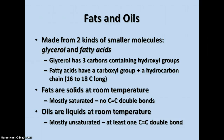The main kind of lipids that we normally think of are fats and oils. These are made from two kinds of smaller molecules: glycerol and fatty acids. The glycerol is a three-carbon compound that contains three hydroxyl groups. The fatty acids have a carboxyl group plus a hydrocarbon chain that's 16 to 18 carbons long, so there are lots of carbon and hydrogen present.